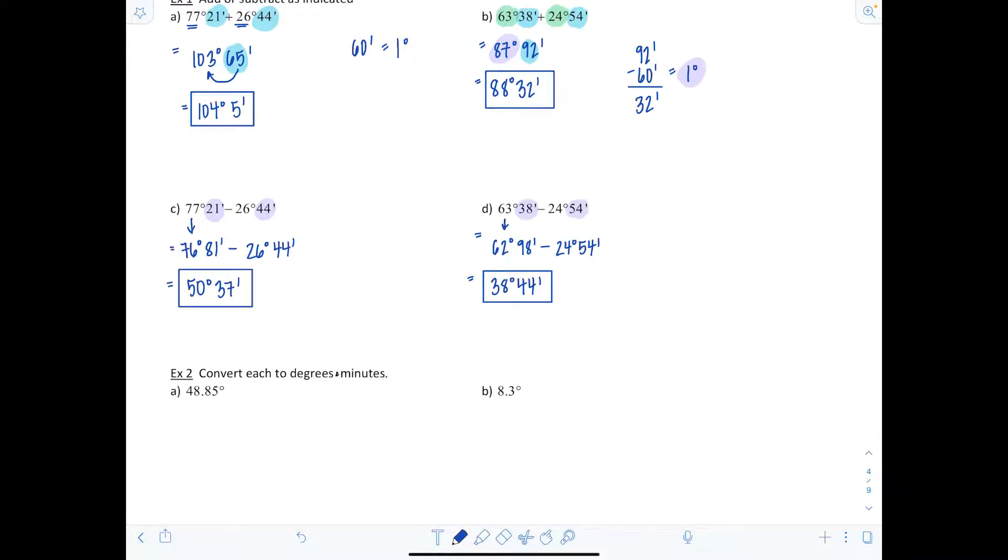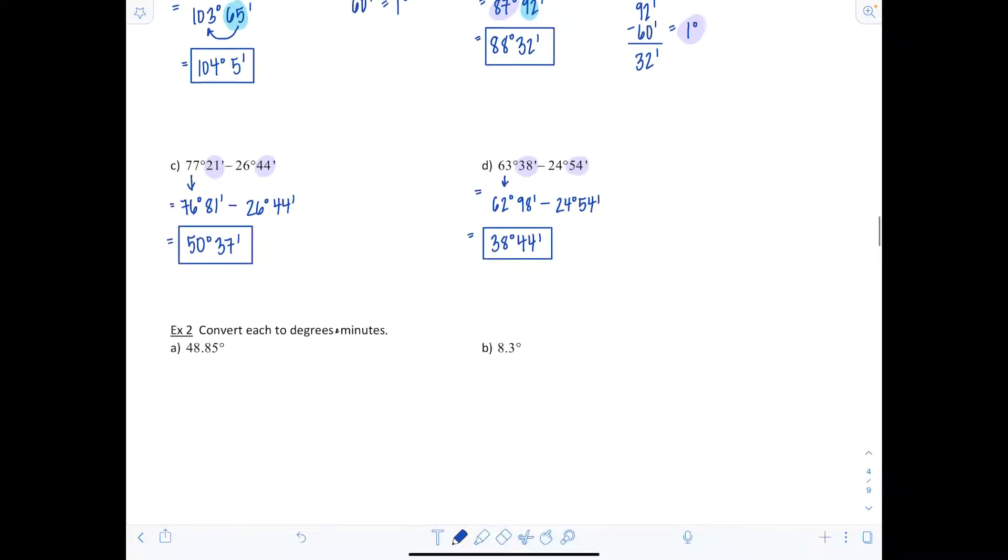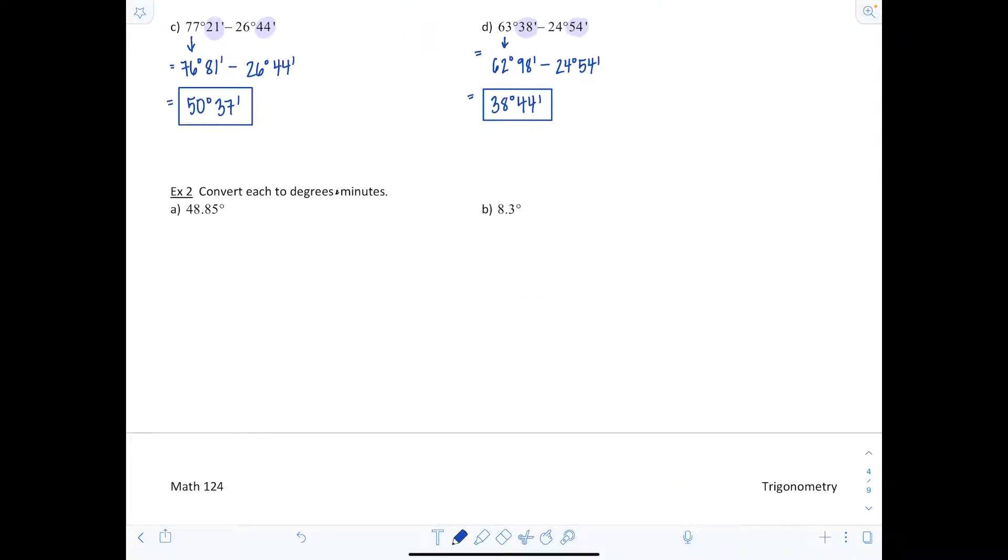Now we're going to look at some degrees that are being measured with decimals and convert them to degrees and minutes instead of using decimals. You're gonna take the portion of the degree, the part after the decimal, and multiply it by 60. That way you figure out exactly how many minutes there are. Remember one minute is equal to 1/60th of a degree.